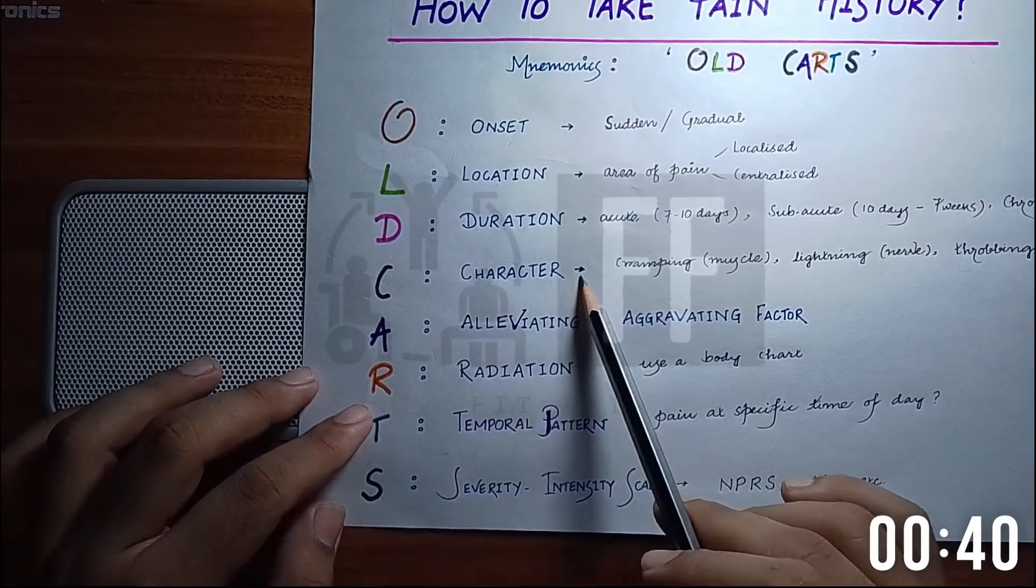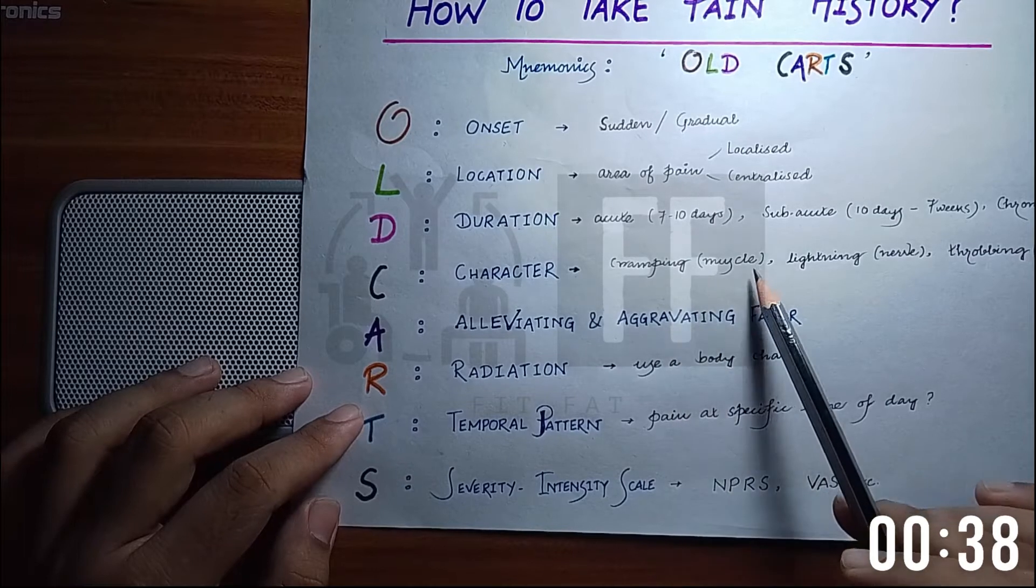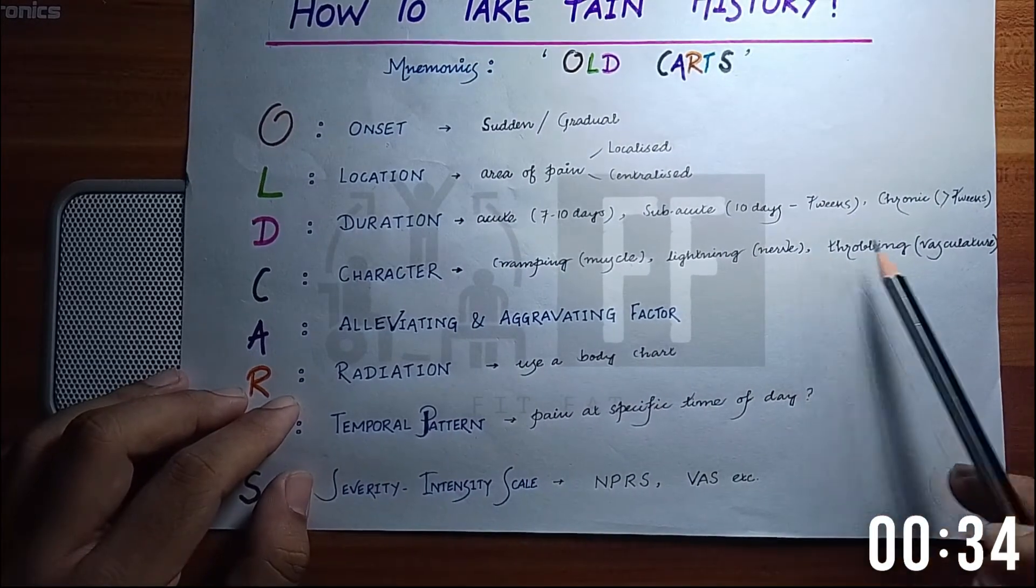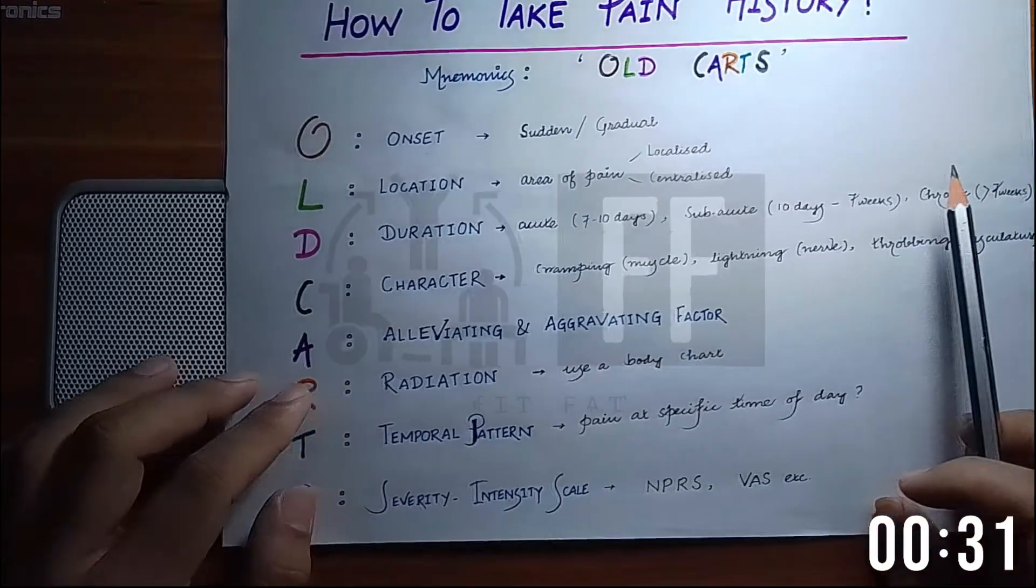C for character of the pain. If it's cramping, it may be muscle pathology. If it's lightning pain, maybe nerve pathology, and if it's throbbing, maybe vascular pathology.